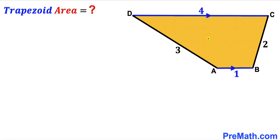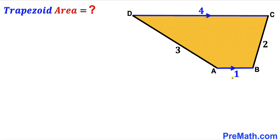Welcome to pre-math. In this video we have got this yellow shaded trapezoid ABCD as you can see in this given diagram, such that side length CD is 4 units, side length BC is 2 units, side length AB is 1 unit, and side AD is 3 units. Moreover, side AB is parallel to side CD, and our task is to calculate the area of this trapezoid ABCD.